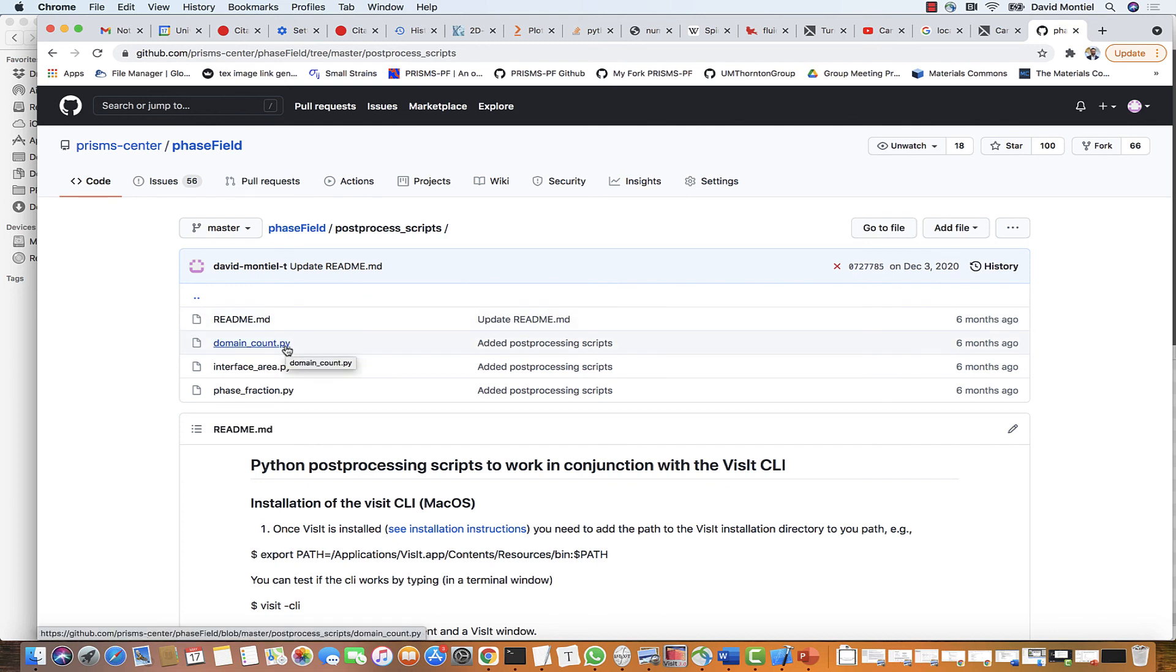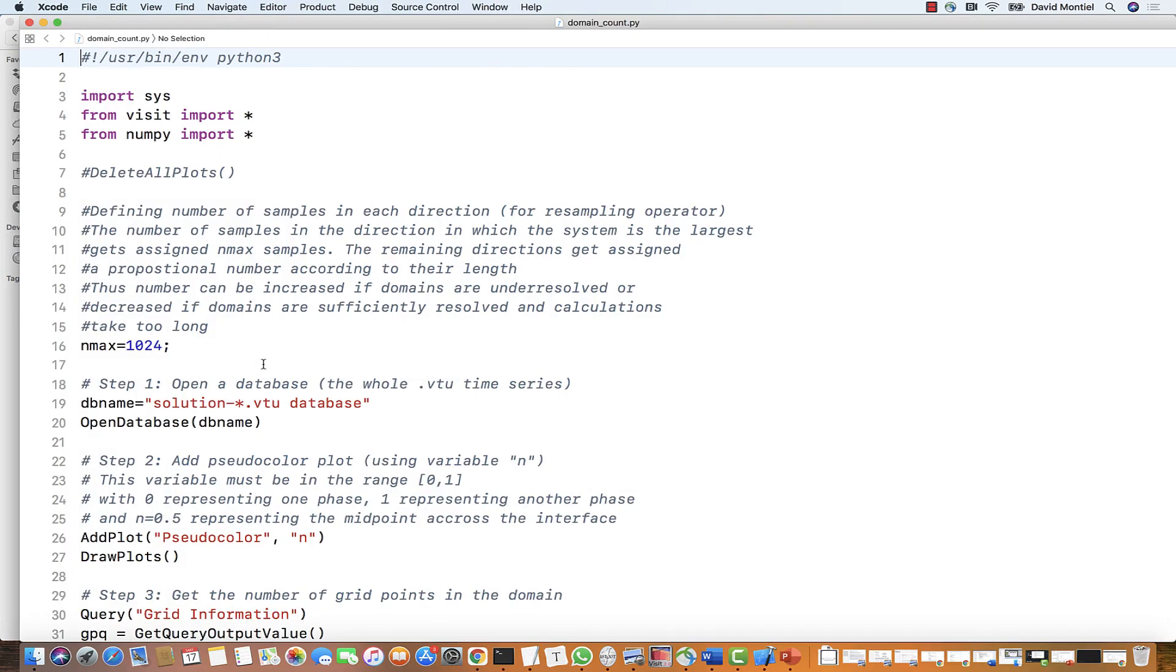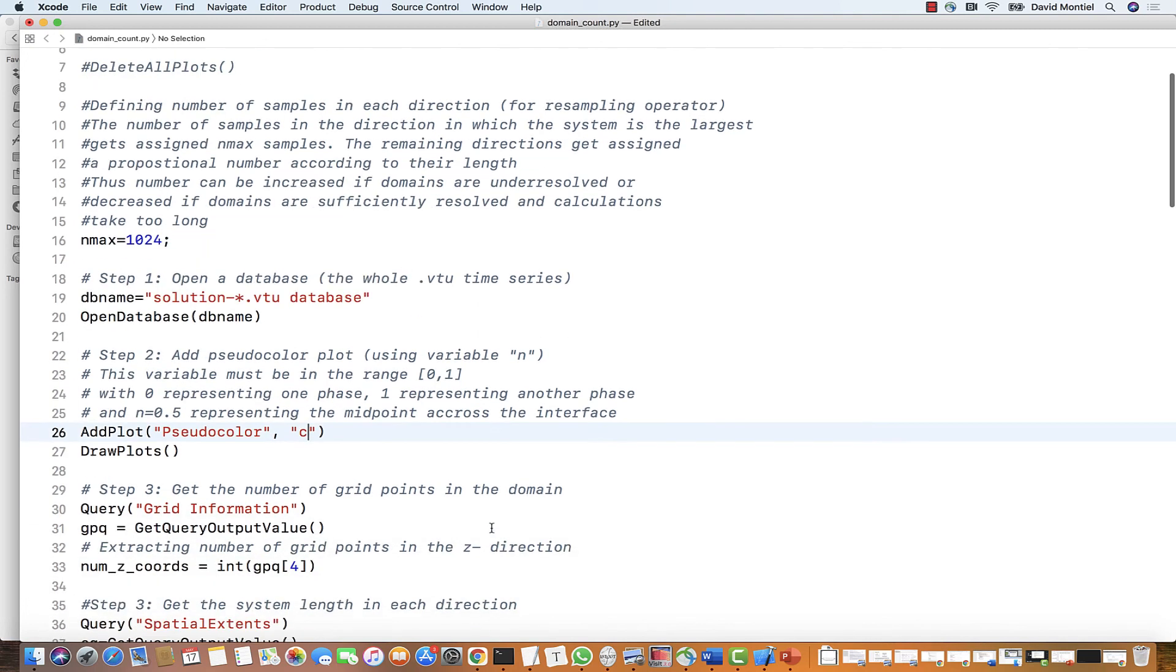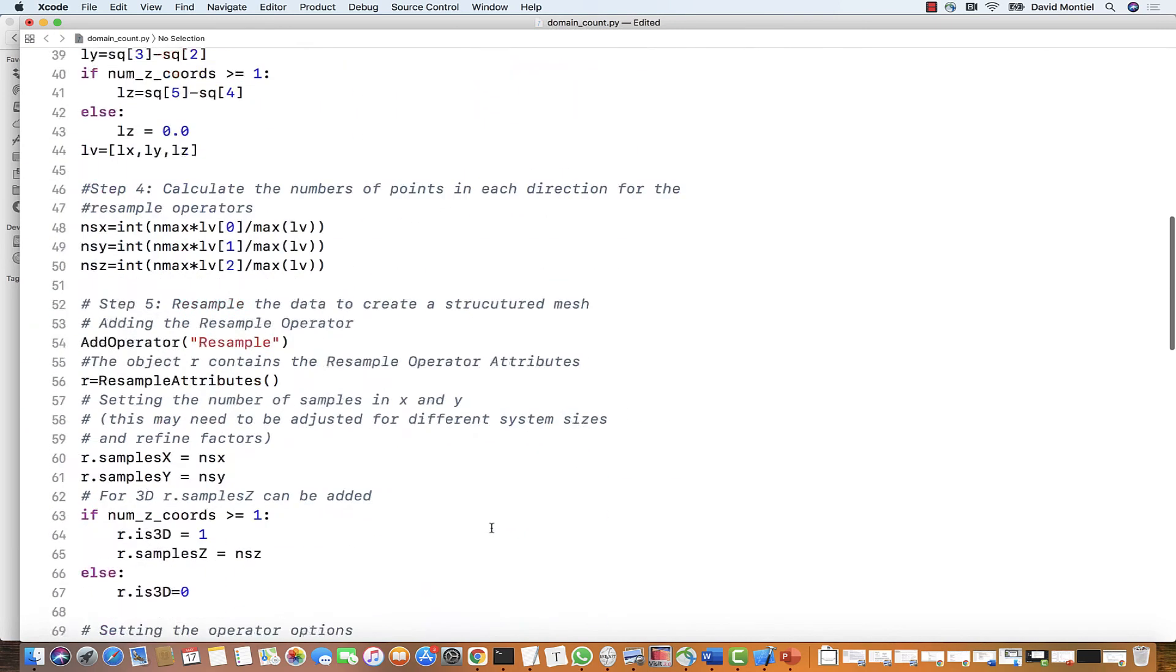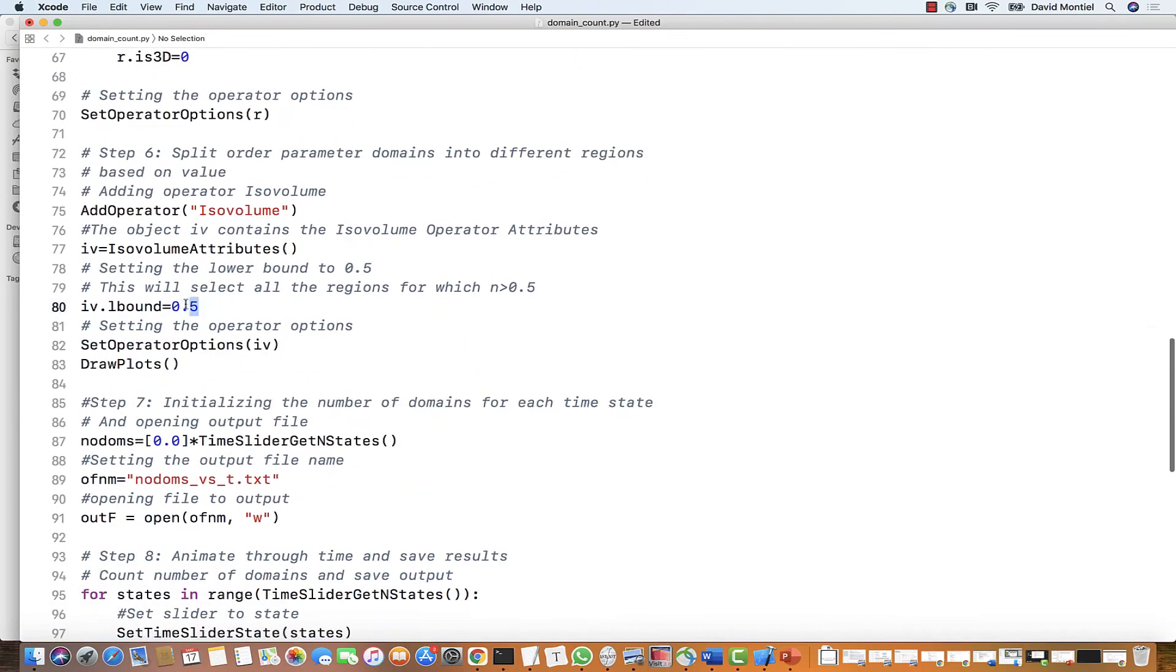So domain count calculates the number of independent domains in the system. This means the number of regions of a single phase that are not connected in space, and it will output this result for the simulation times corresponding to the .vtu files. Before we run it, we just need to change the variable to analyze from the default, which is N, to the rescaled concentration in our simulations, which is C. Now, the way this is set up is to count all the regions where the value of the field is higher than 0.5. So in this case, it'll count the red regions, but you can easily modify this to count the blue regions.